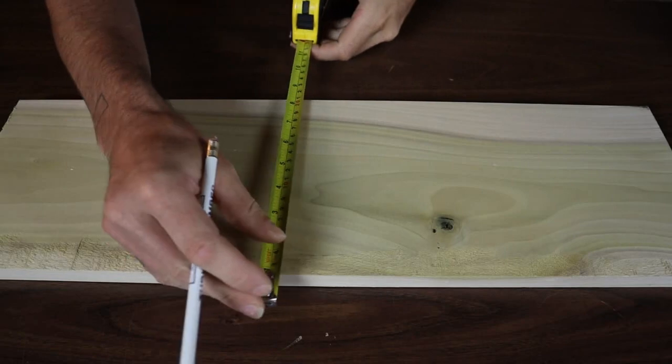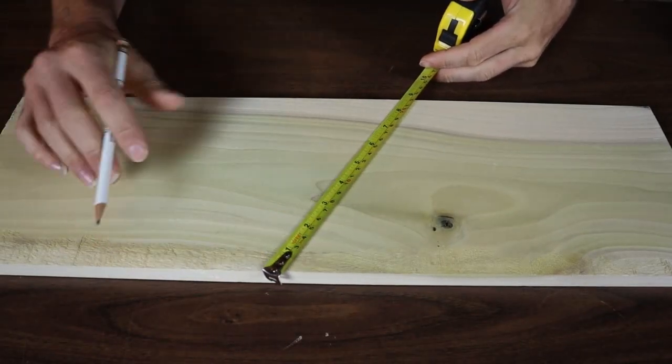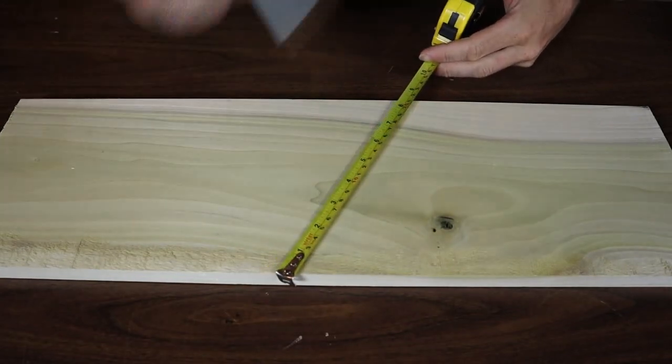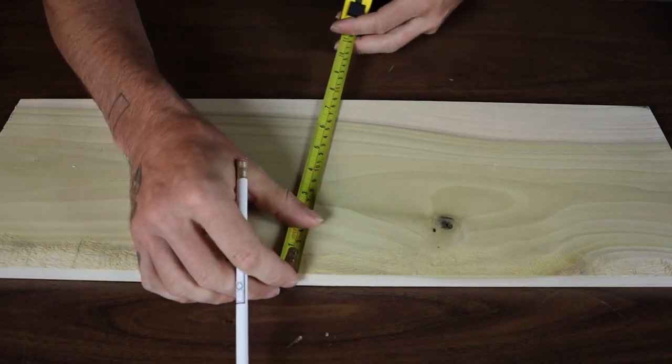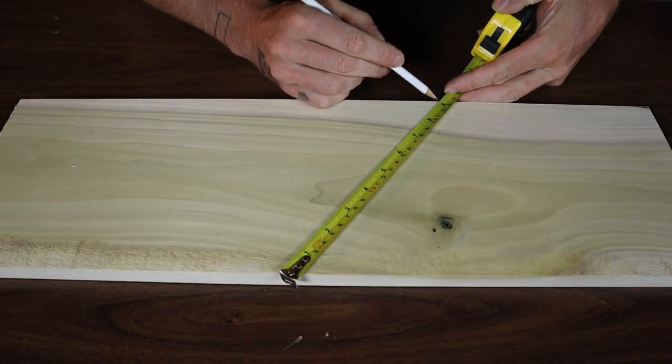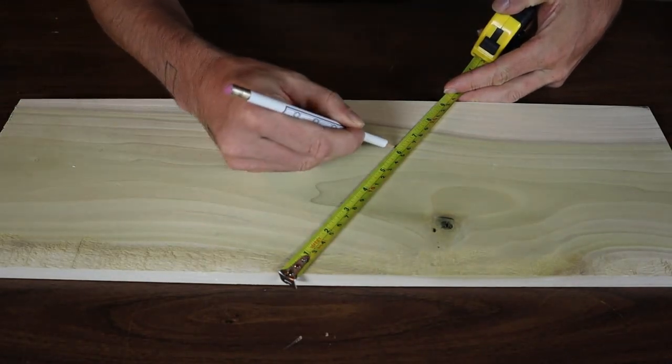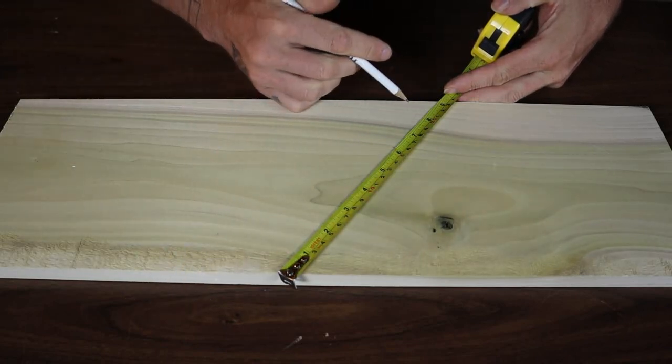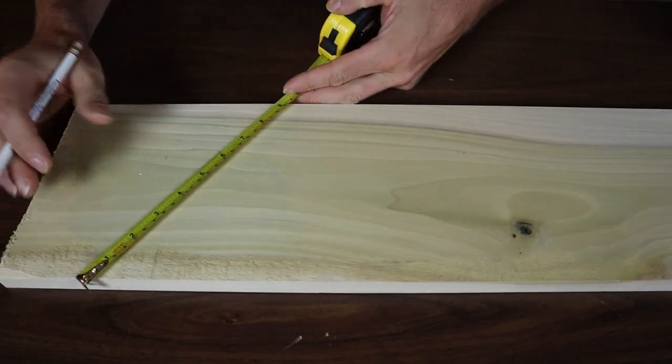So what you do is you take your tape measure and you angle it and you pick points. So let's say I want to divide this up into three equal segments. So I pick a number that three divides into, so let's say nine. So I take my tape measure, I angle it across like this until nine inches is right on this edge and then I can pick three and six. And now I've got one, two, three perfectly equal segments.